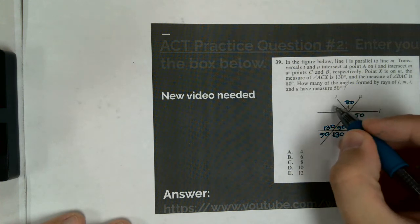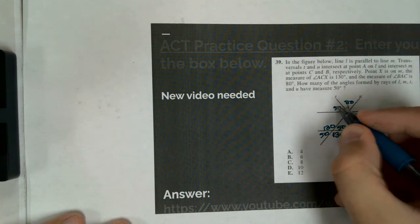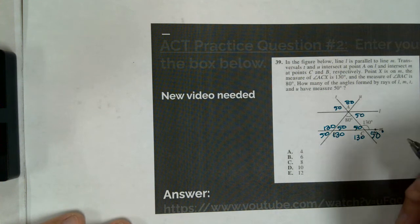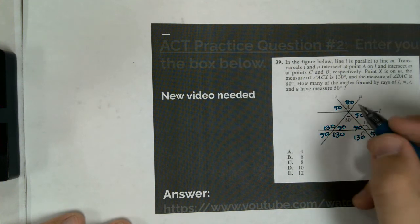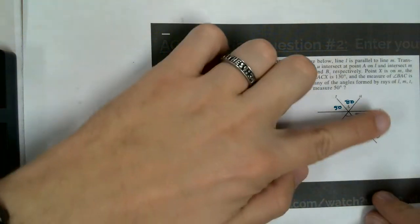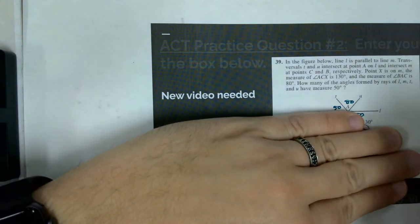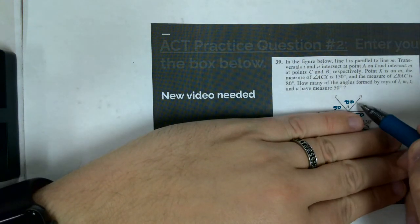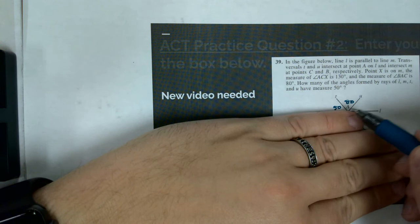So this 50 is going to be vertical with this angle. So that would make that a 50 degree angle. And then if I was to just look up here at just the top, right there, I've got a 50, I've got an 80, and then I've got another angle.